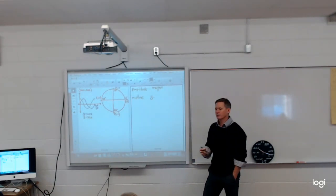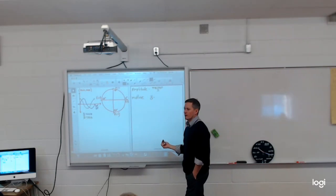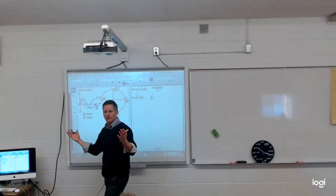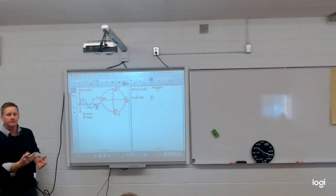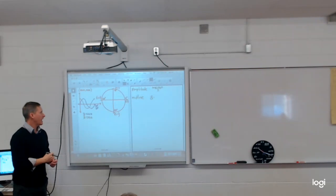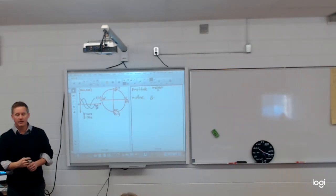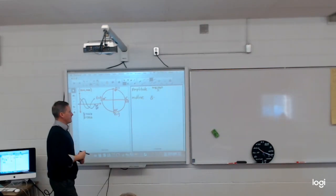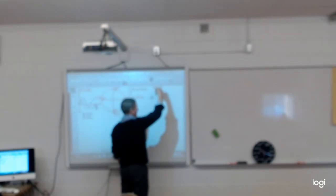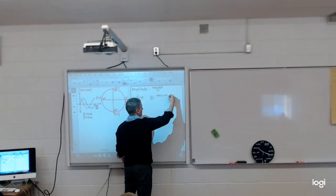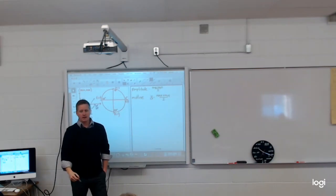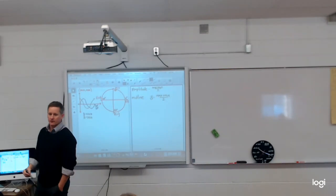Your midline is the equation of the line that divides the graph into two equal parts. It's very similar to what we've done before — axis of symmetry. Same thing. My midline equation is the average of the maximum and minimum. That's how I get my midline.